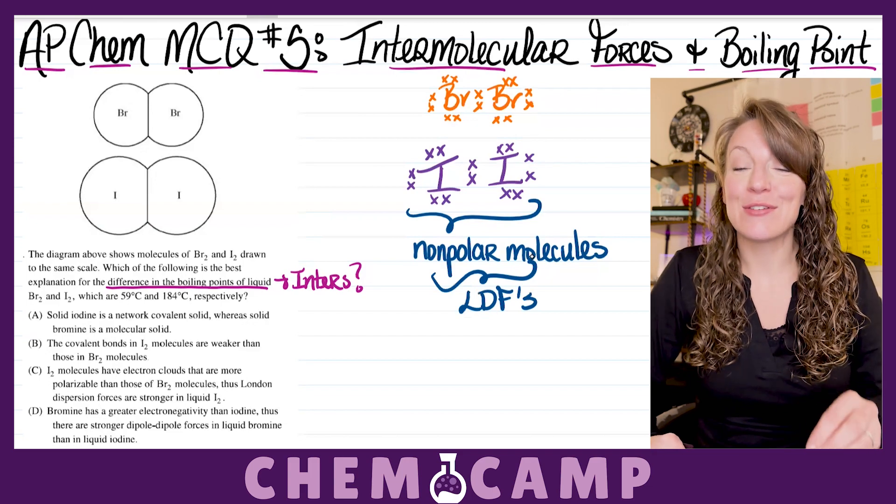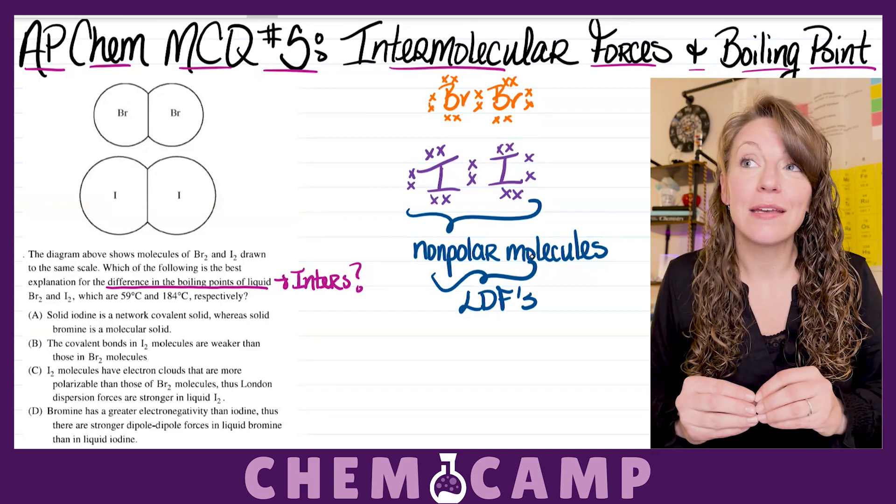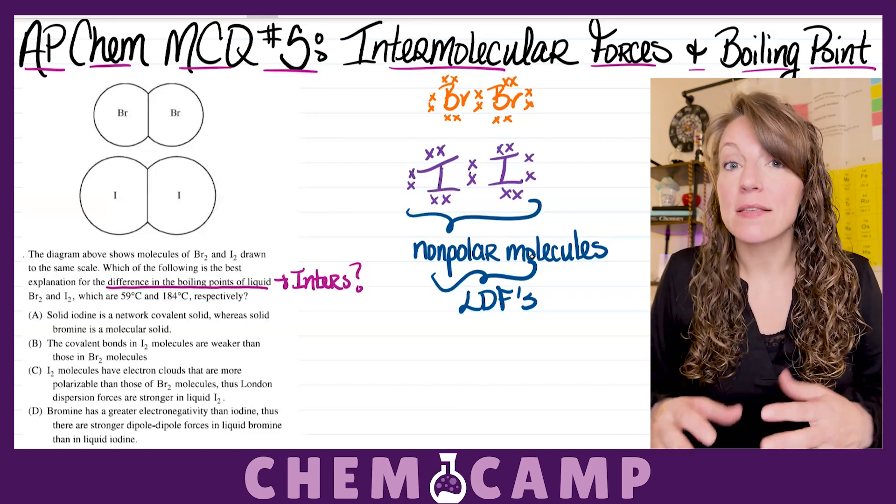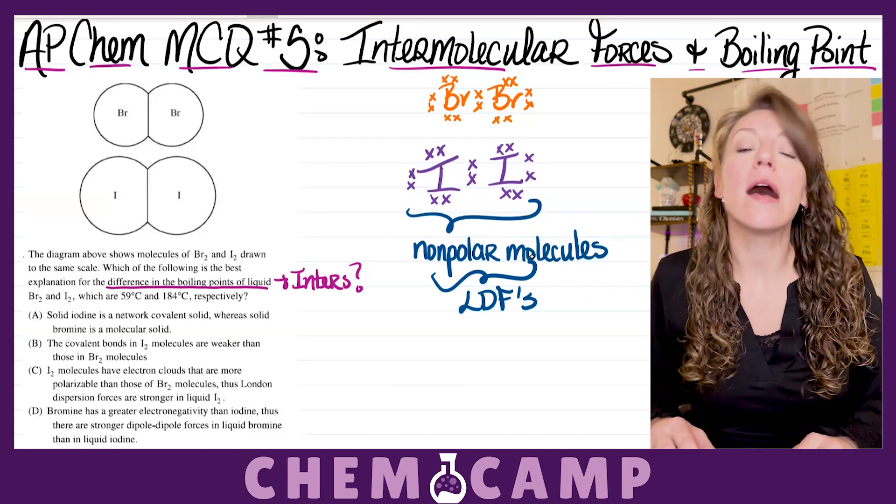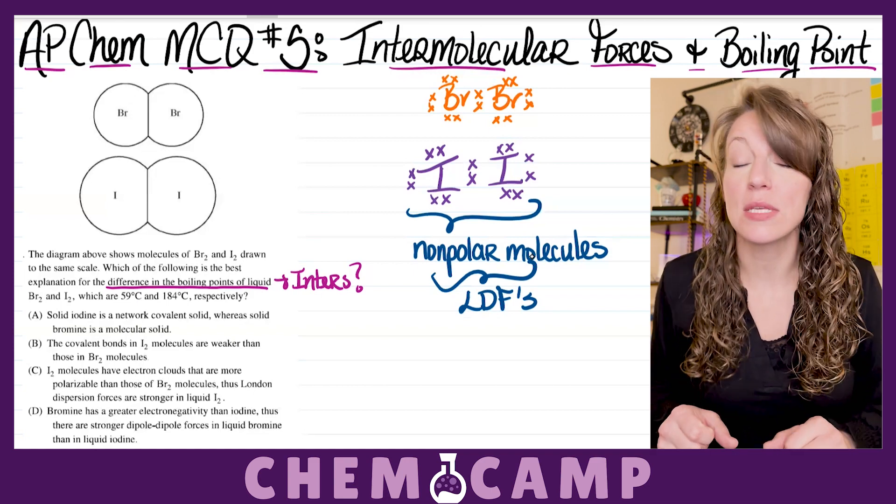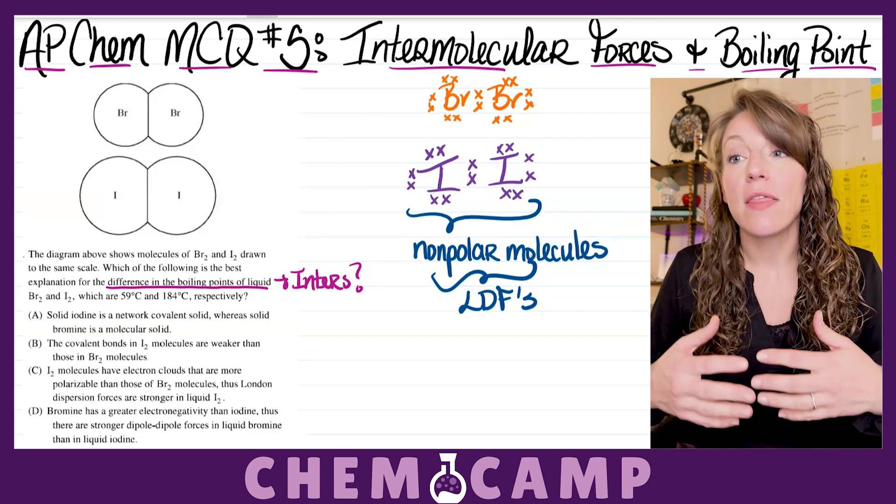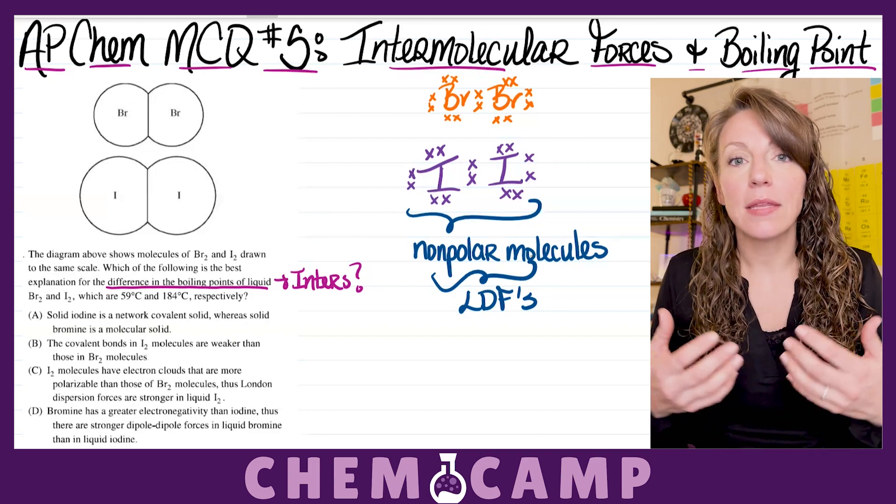So, what you have to keep in mind is when you're dealing with London dispersion forces, they're actually what's referred to as induced dipoles. Meaning, since they're non-polar molecules, you actually have to force a dipole moment to happen. So, what happens with non-polar molecules is as they are nearby each other, they wind up colliding with each other. And in the moment that they collide, they distort their electron clouds.